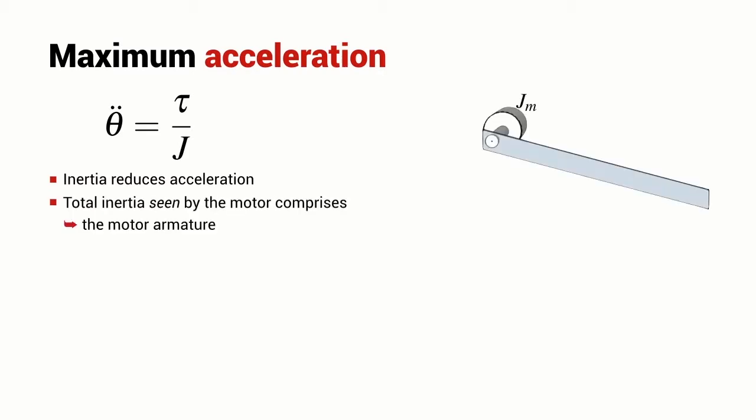The inertia that the motor experiences has got two components. One of those components is the inertia of the motor's armature. That's the rotating part of the electric motor that I denote by J sub M. The other inertia that the motor experiences is due to the link itself.